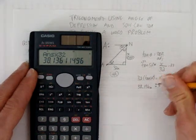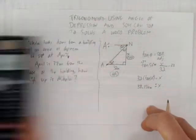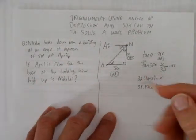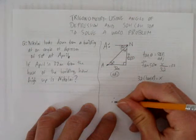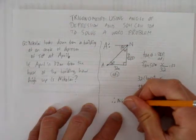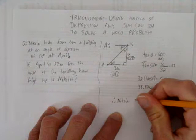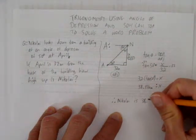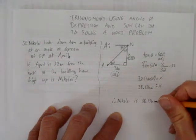And since we rounded, we have to put a rounding dot. Last thing to do, since this is a word problem, we need a word answer. Therefore, how high up is Nikolai? Nikolai is 38.136 meters high.